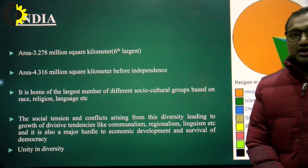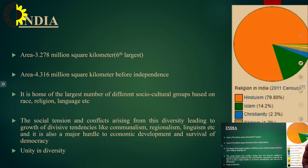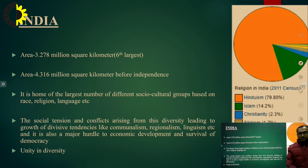Let us talk about our country first. India's area is the sixth largest in the world, with 3.278 million square kilometers. Before independence, its area was 4.316 million square kilometers. In 1947, our country was divided into two parts — East Pakistan and West Pakistan. One of them was liberated in the year 1971 and is now called Bangladesh.